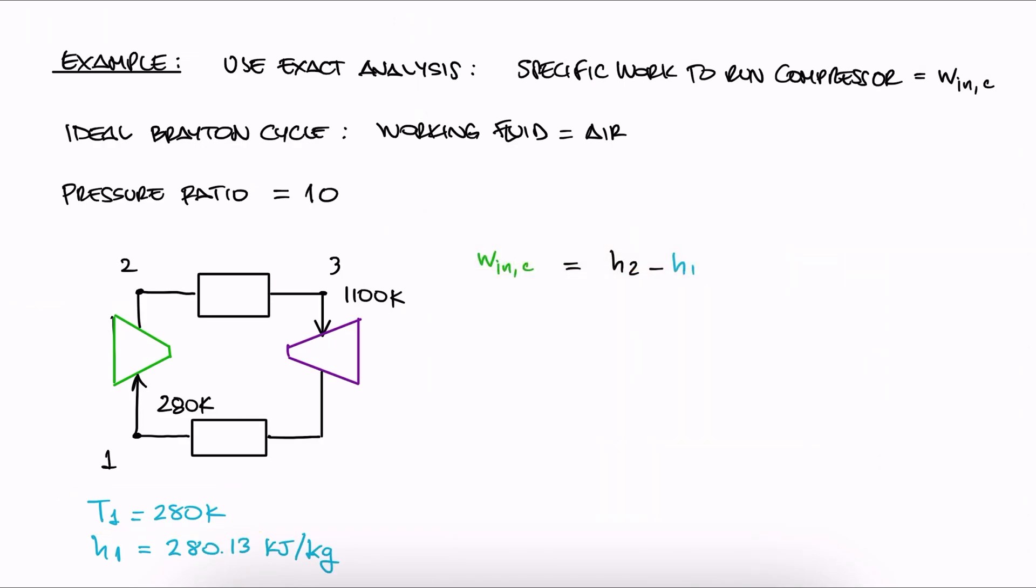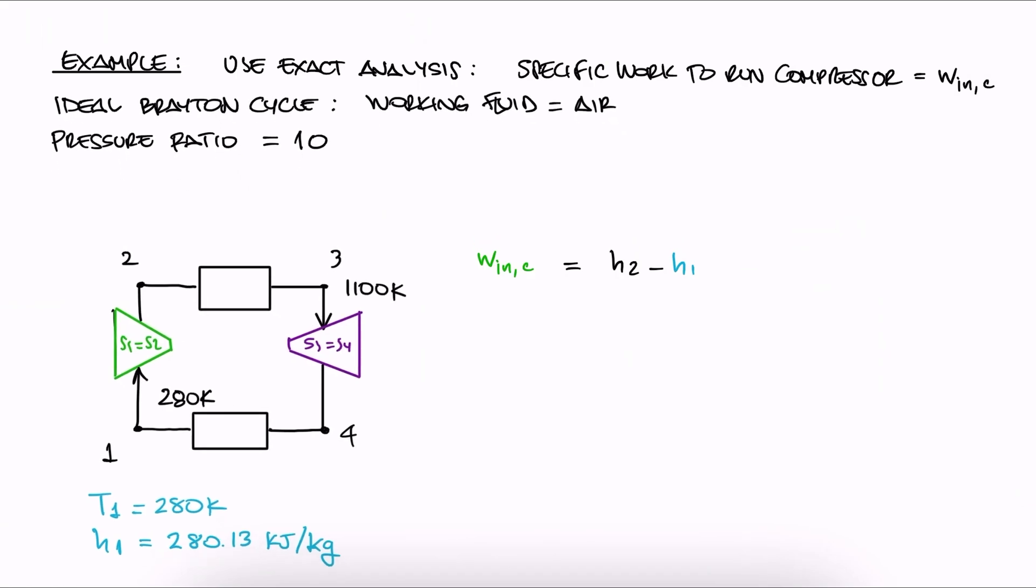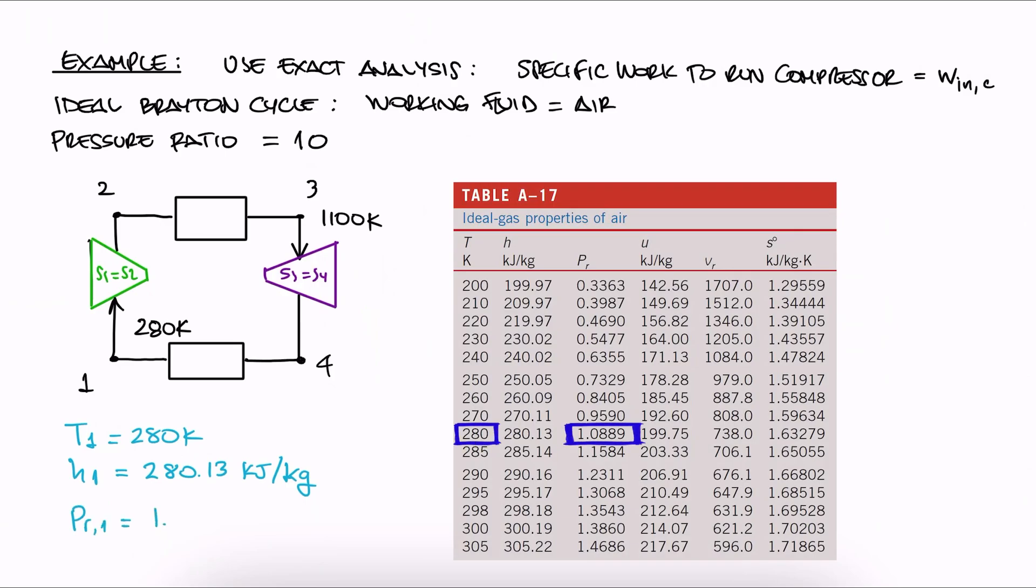Now for h2, remember that we are assuming an ideal Brayton cycle, which means that the compressing and expansion processes are going to be assumed isentropic. Therefore, we can also write down the relative pressure value PR1.